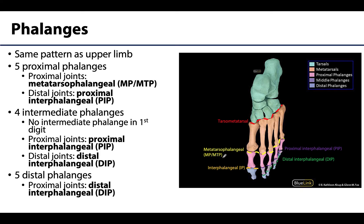The organization of the phalanges of the toes is very similar to the phalanges of the fingers and they share the same names. There are five proximal phalanges, four intermediate phalanges — the first digit lacks an intermediate phalange — and five distal phalanges. The joints between the proximal and intermediate phalanges are the proximal interphalangeal or PIP joints, and the joints between the intermediate and distal phalanges are the distal interphalangeal or DIP joints.